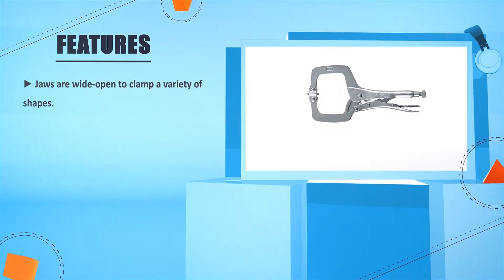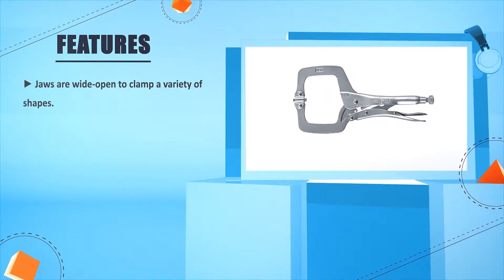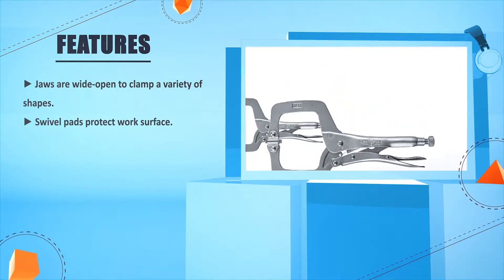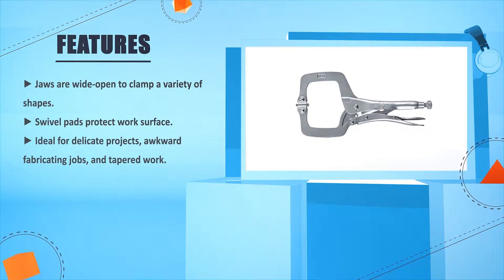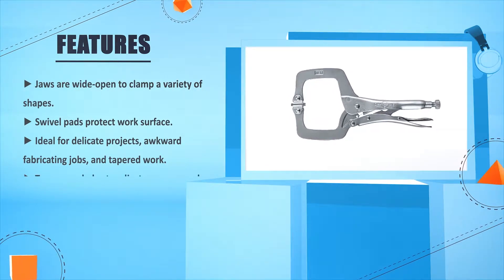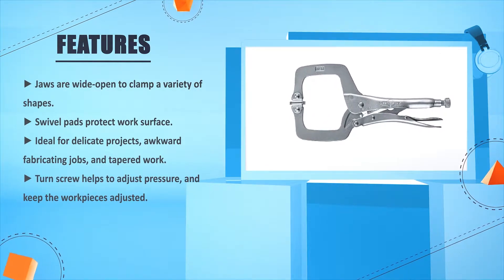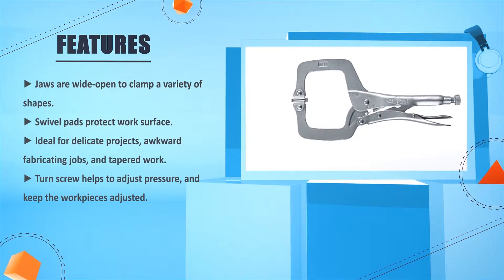Jaws are wide open to clamp a variety of shapes. Swivel pads protect work surface. Ideal for delicate project, awkward fabricating jobs, and tapered work. Turn screw helps to adjust pressure and keep the work pieces adjusted.